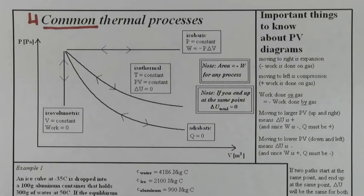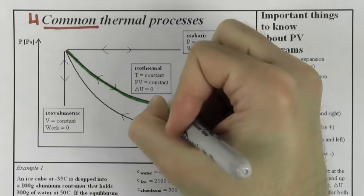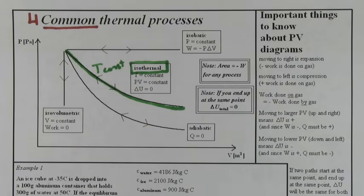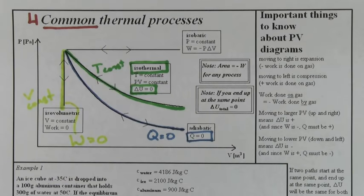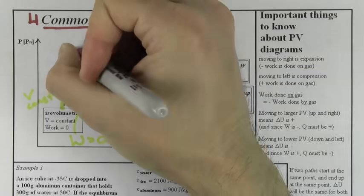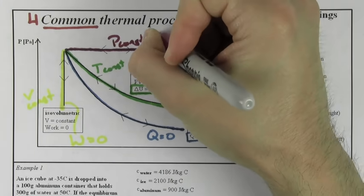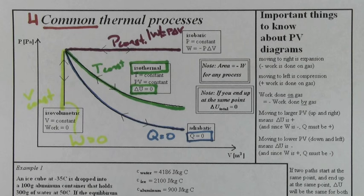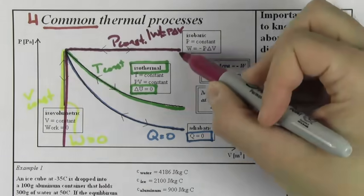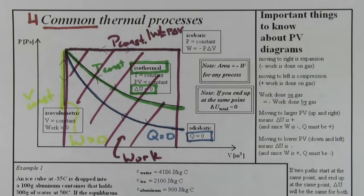On a p-v diagram, any process can happen, but there are four common thermal processes that are talked about most often. One is called isothermal. In this process, the temperature is constant. In other words, the change in internal energy is zero. Another one is called adiabatic. In this process, no heat is transferred into or out of the gas, so Q is zero. During an isovolumetric process, the volume of the gas is constant, so no work is done on the gas, and W is zero. During an isobaric process, the pressure is constant, and you can easily find the absolute value of the work done by taking p times delta v. You can use this formula because the absolute value of the work done by any process equals the area underneath that process.